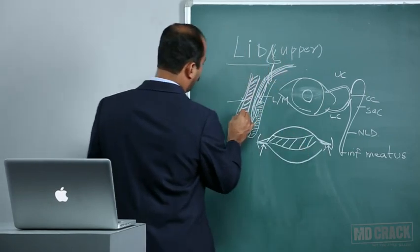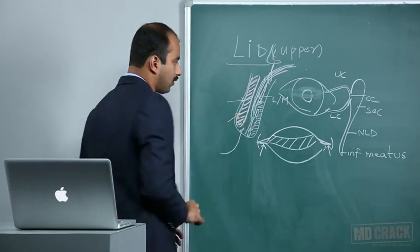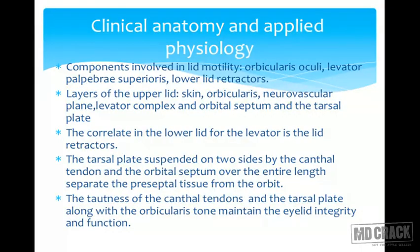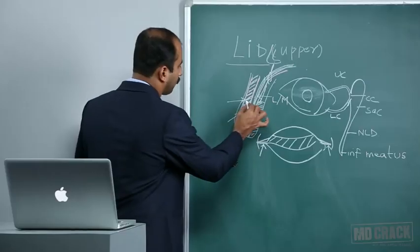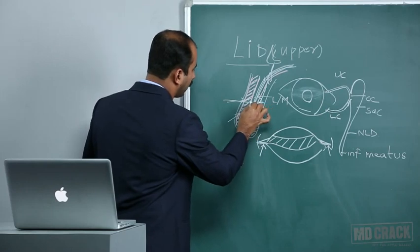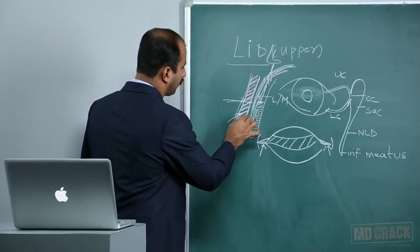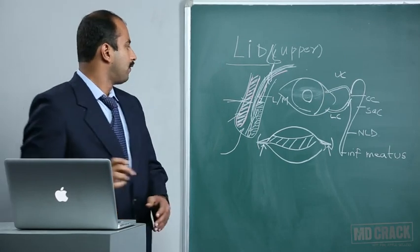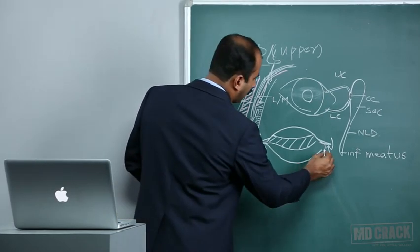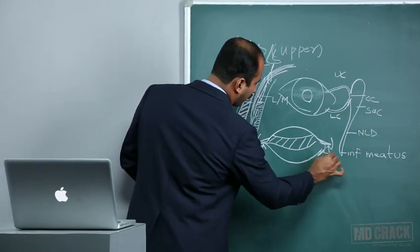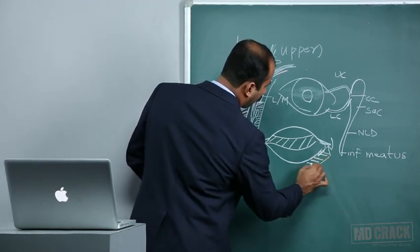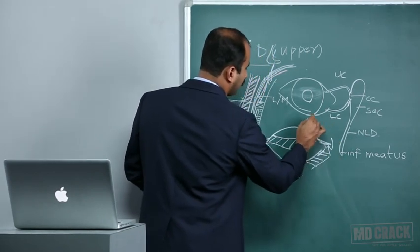The canthal tendons along with the orbicularis muscle offer tone and posture to the lid. Any problem with these can lead to entropion, ectropion, and ptosis. The pretarsal orbicularis — the part in front of the tarsal plate — is very important for structural stability of the lid and for the functioning of the lacrimal pump near the canaliculus medially.